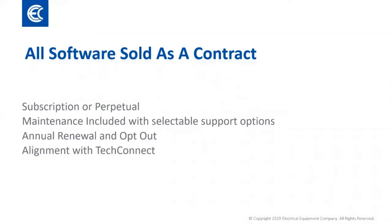Rockwell's release of their software portal has introduced major changes to their traditional software ordering process. Every software order through the portal is completed as a contract with terms affecting license type, maintenance terms, and support options. The traditional part numbers are now delivered as bundled part numbers reflecting the software product along with the type of license selected and the maintenance terms chosen as part of the contract.